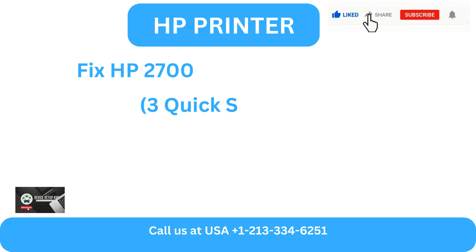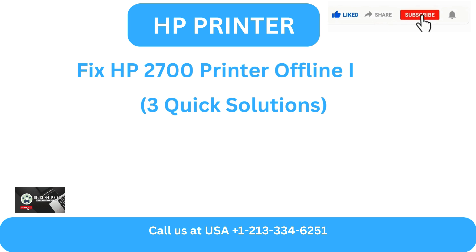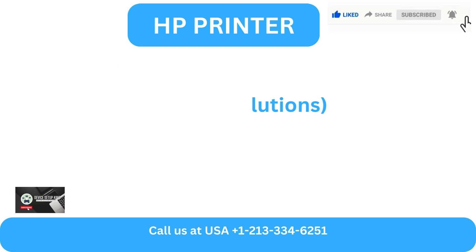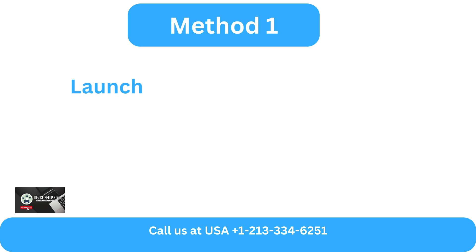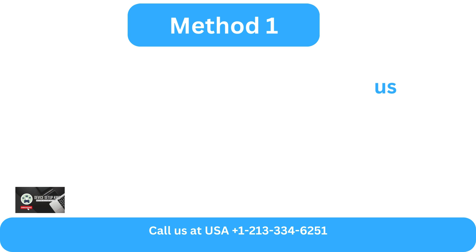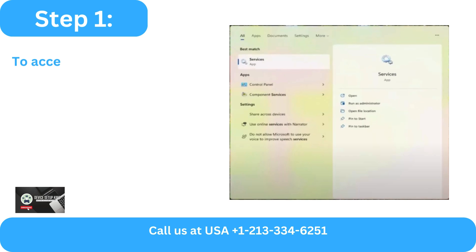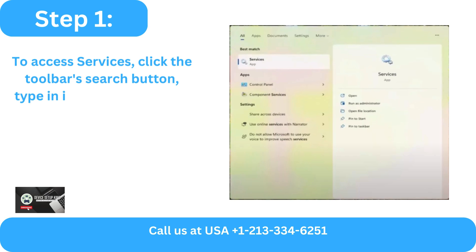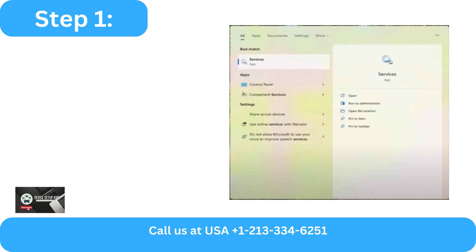Fix HP 2700 Printer Offline Issue: 3 Quick Solutions. Method 1: Launch Windows Services. Step 1 - To access services, click the Toolbar Search button, type in its name, then click.